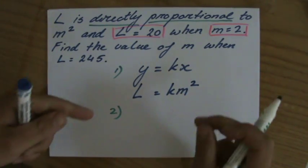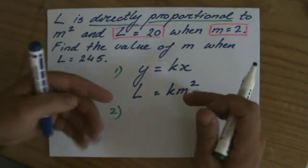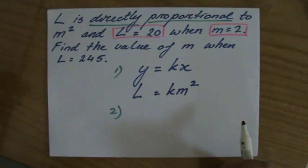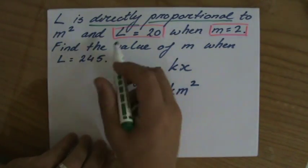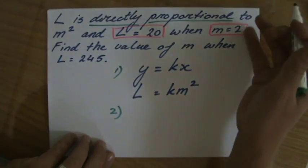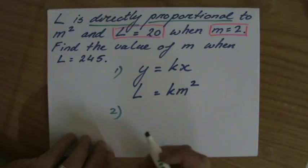Because you need to make the equation that belongs to this particular situation. L is 20 when m is 2. Now let's substitute that in this equation.